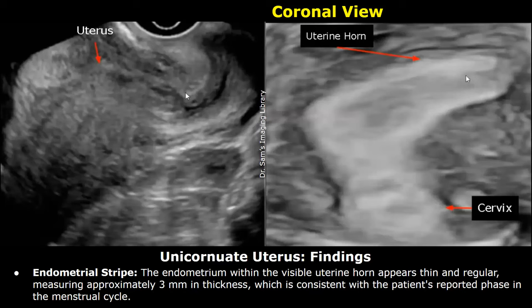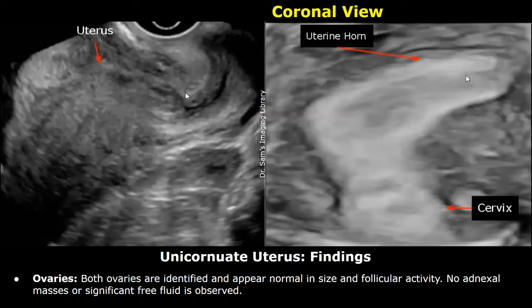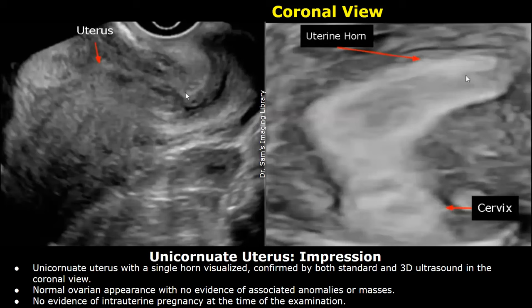Endometrial stripe: the endometrium within the visible uterine horn appears thin and regular, measuring approximately three millimeters in thickness, which is consistent with the patient's reported phase in the menstrual cycle. The ovaries appear normal. This is the impression: unicornuate uterus with a single horn visualized, confirmed by both standard and 3D ultrasound in the coronal view. Normal ovarian appearance with no evidence of associated anomalies or masses. No evidence of intrauterine pregnancy at the time of the examination.